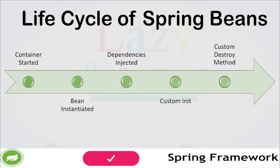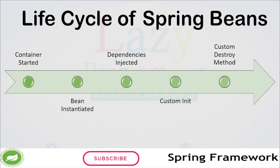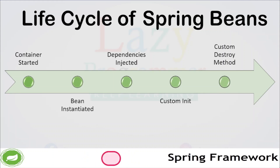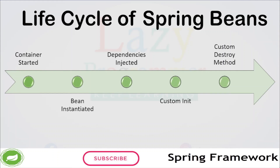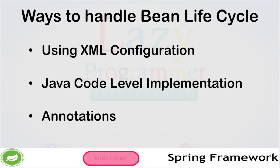If we want to execute some code on bean instantiation and just after closing the Spring container, then we can write that code inside custom init methods and custom destroy methods. The complete flow of bean lifecycle starts with the container, then the bean is instantiated, dependencies are checked and injected as per the XML or annotation-based configuration. If there is any custom init method provided, that will be executed. Then it performs its operations, and at the end when the container is closing, the custom destroy method is called where any cleanup activities can be done.